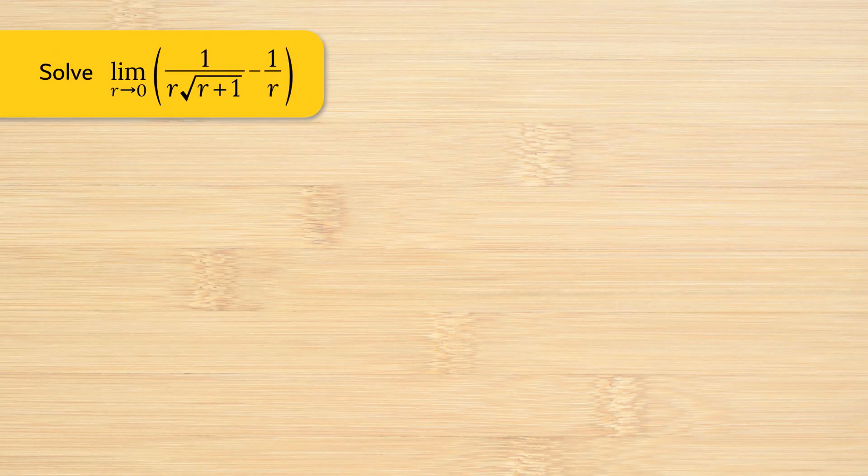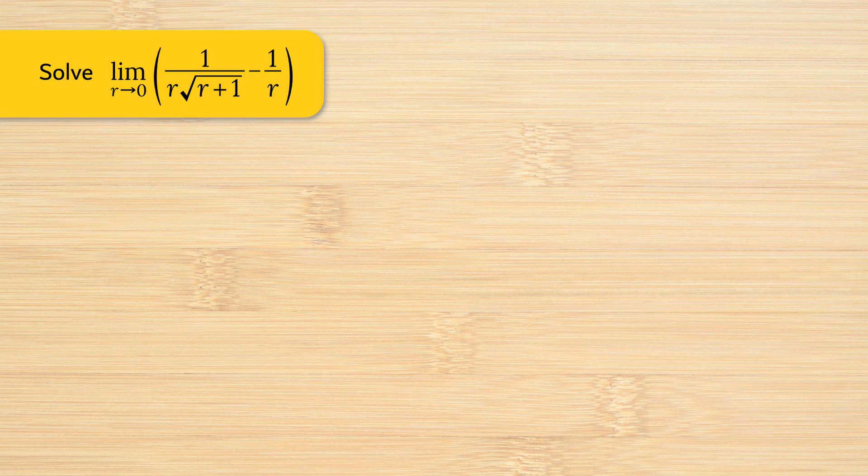Solve the limit as r approaches 0 in the function 1 over r multiplied by the square root of r plus 1, minus 1 over r.